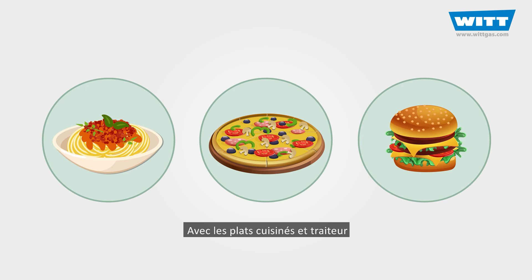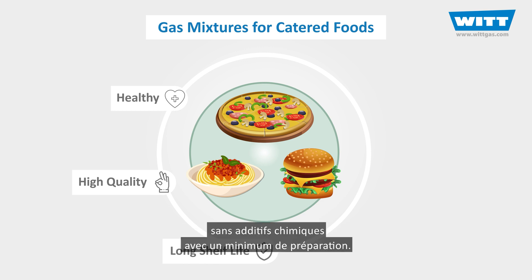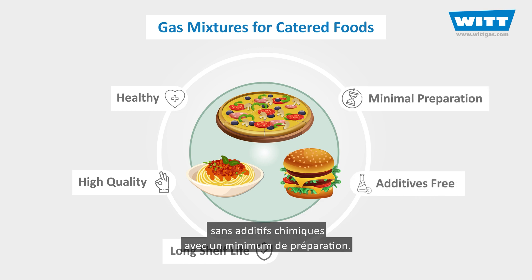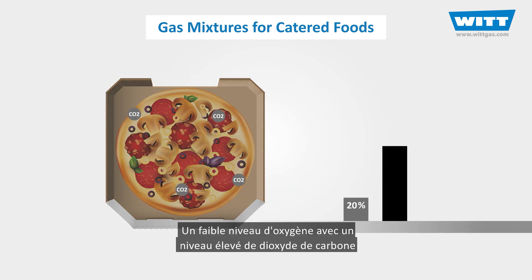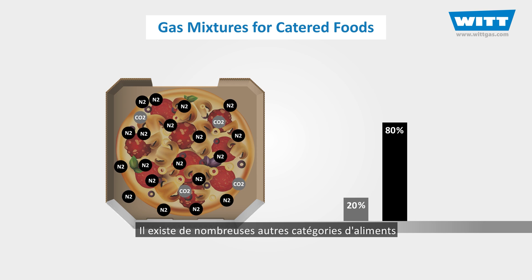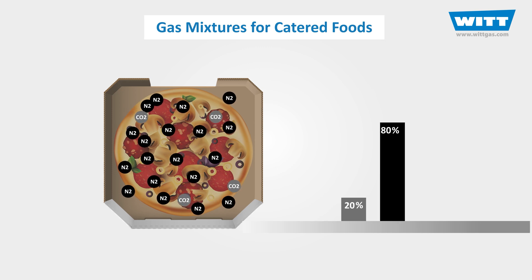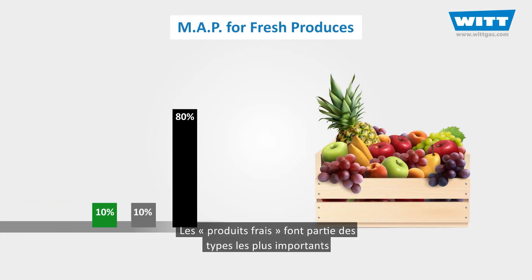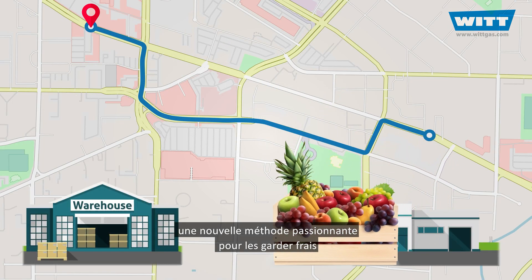With ready meals and catered foods, customers expect healthiness and high quality with long shelf life, without chemical additives and with minimal preparation. In order to meet these demands, atmosphere control combined with the correct temperature is the best solution. Low oxygen level with a high level of carbon dioxide will promote such product shelf life. Fresh produces are one of the most important types, and we'll show you in another video a new exciting method for keeping them fresh during transport.